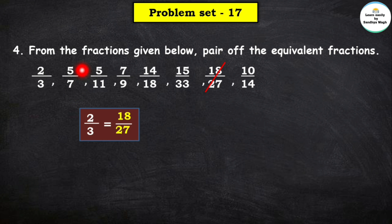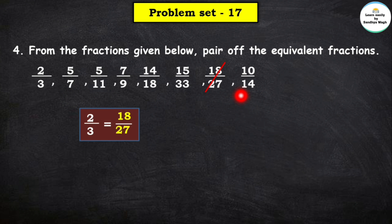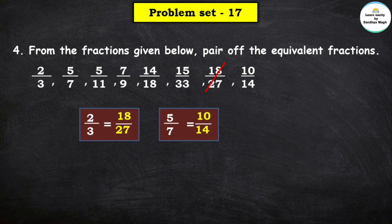Next fraction is 5 upon 7. We look at numbers in the 7 times table: 14 and 21. The denominator 21 is not present, but 14 is. Since 7 × 2 = 14, we multiply the numerator by 2 as well: 5 × 2 = 10. So 10 upon 14 is the equivalent fraction of 5 upon 7.